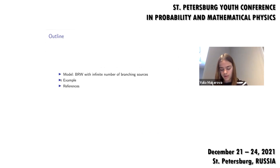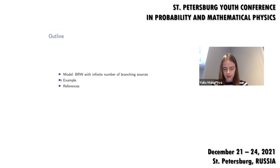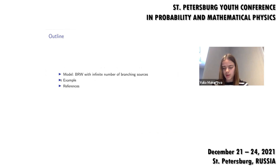Firstly I will describe the model we consider, then speak about an example of the two-type branching random walks which has some applications.